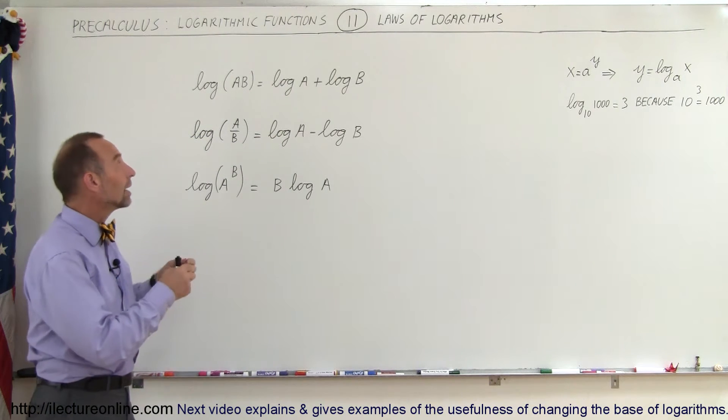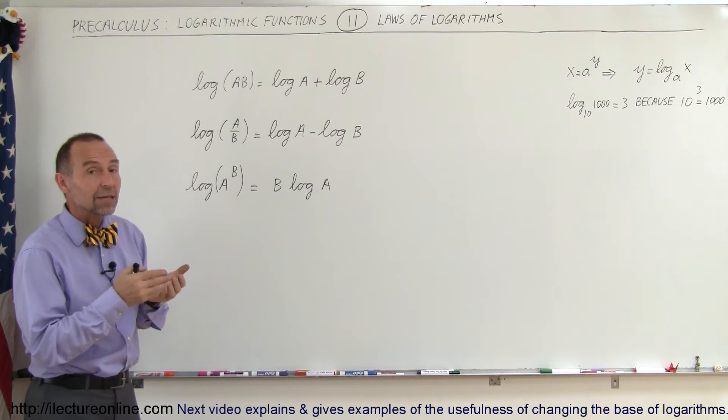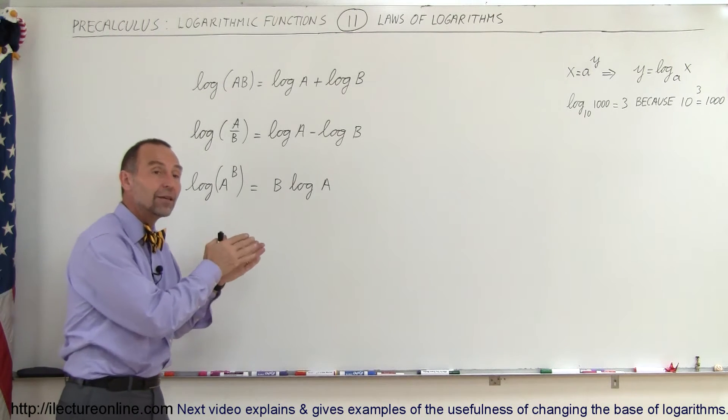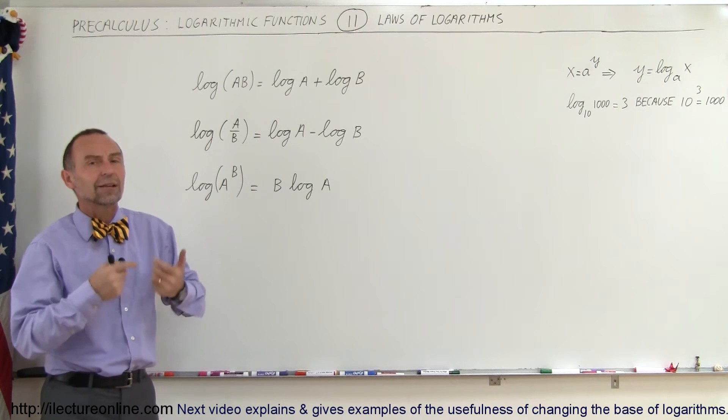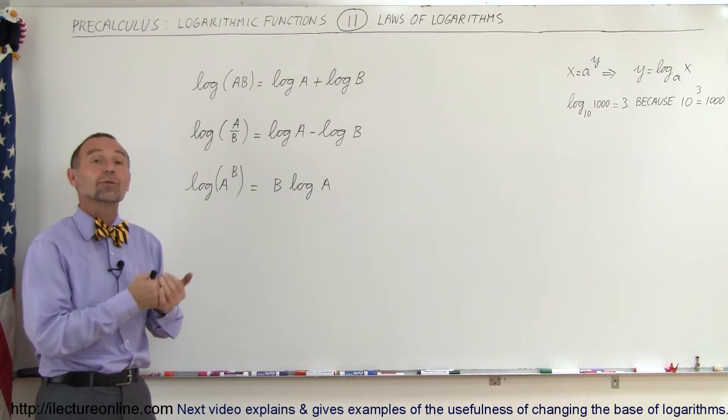So you take the log of ab, separate it, find log a, find log b, add them, and that equals the log of ab. Then if you take the antilog, you get the original result back.